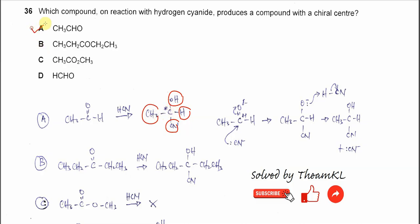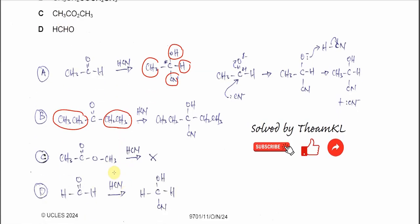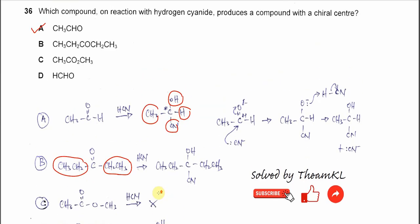The answer is A. Option B cannot produce a chiral carbon because these two groups are the same group, so you cannot get a chiral carbon from this one. For C, this one is an ester, so there is no reaction between HCN and the ester. For D, this is methanal. Methanal, because the carbon has two same hydrogen groups, will not produce a chiral carbon as well. So the answer confirmed is A.